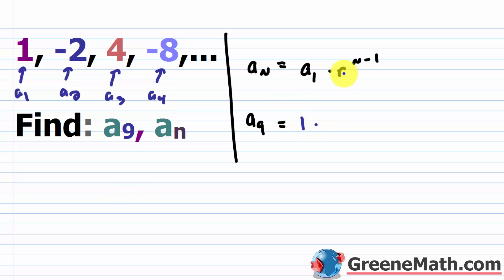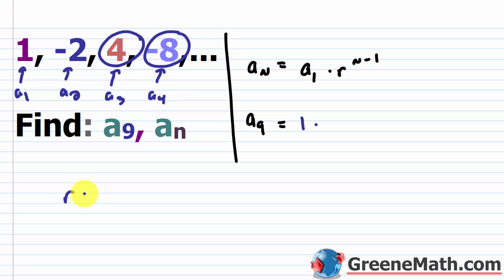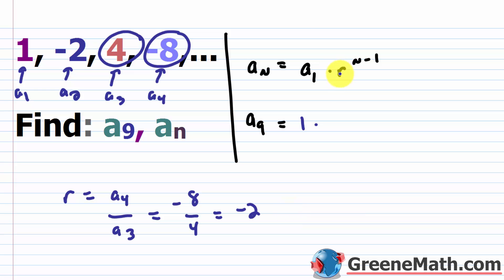What is R? I can grab two adjacent terms — a sub 4 and a sub 3. Take the one on the right with the higher index and divide by the one on the left. So R equals a sub 4 over a sub 3, which is negative 8 over 4, which is negative 2. When you have a negative, you need to wrap it inside parentheses because the negative and the 2 are both raised to the power of n minus 1.